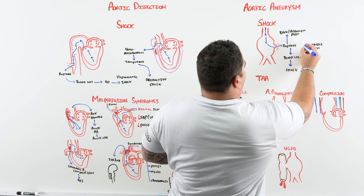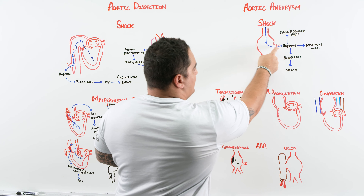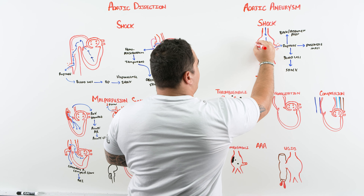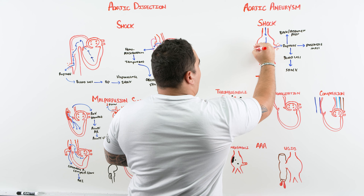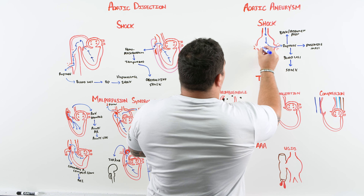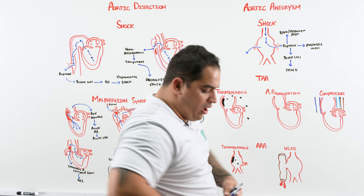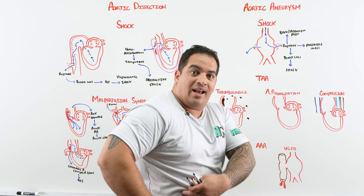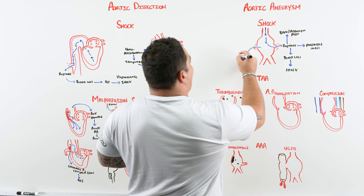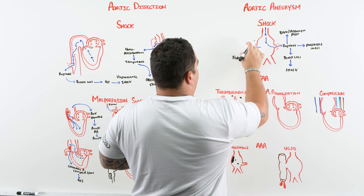The abdominal aorta is retroperitoneal, so when blood leaks into that retroperitoneal space it causes flank ecchymosis. So look for evidence of flank ecchymosis as a sign of retroperitoneal hemorrhage from a ruptured abdominal aortic aneurysm.